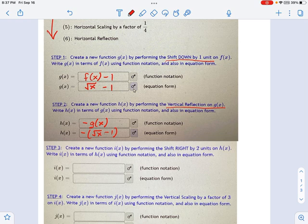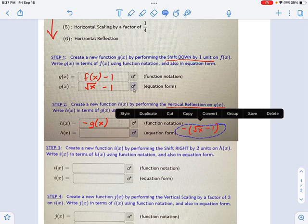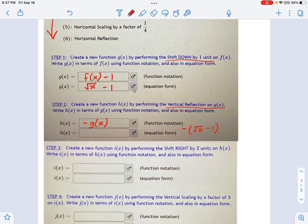Which we could rewrite as negative square root of x plus 1. And I think it would be easiest if we simplified that at this stage. So I'm just going to go ahead and grab this guy, move it over, and let's write the simplified form in here. So that's going to be negative square root of x plus 1.